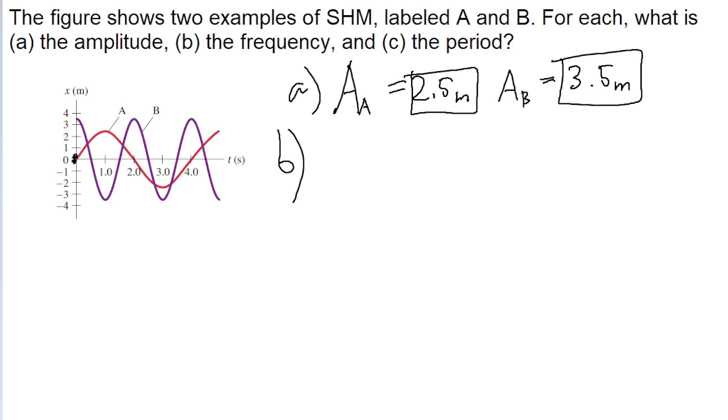So for A, we can see we start at the origin, move above the axis, then move back below, and then back to where we started. The entire cycle is completed in 4 seconds.